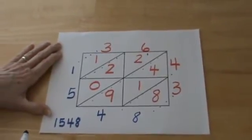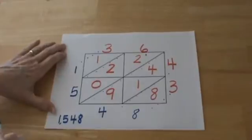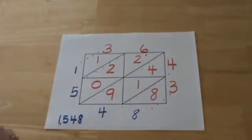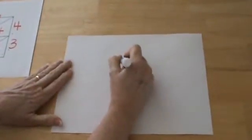So 36 times 43 is 1548. We can check that using the traditional method of multiplication.